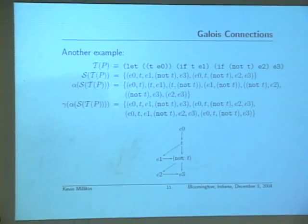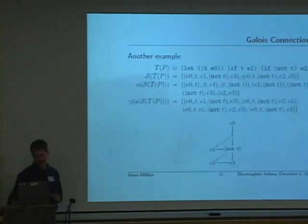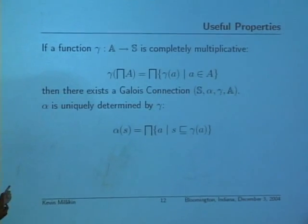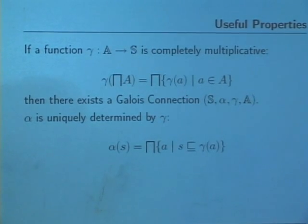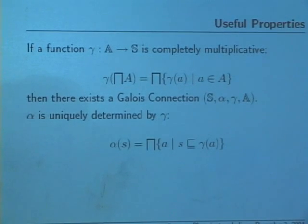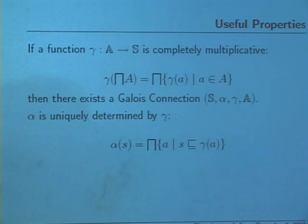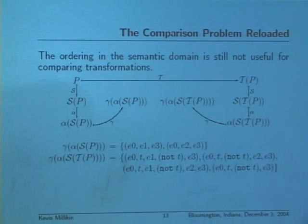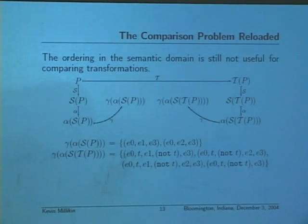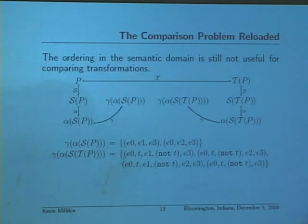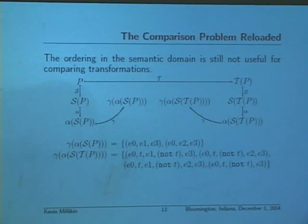That suggests there's extra information being added by this transformation. If a function is completely multiplicative — meaning it commutes with greatest lower bounds, a property like continuity from domain theory — then we know there exists a Galois connection. And alpha is completely determined by gamma. We can use gamma to map the analysis results back to the concrete semantic domain, which is how we really interpret those results. But they're still not directly comparable — the partial order on sets of execution traces is subset ordering, and neither is a subset of the other.